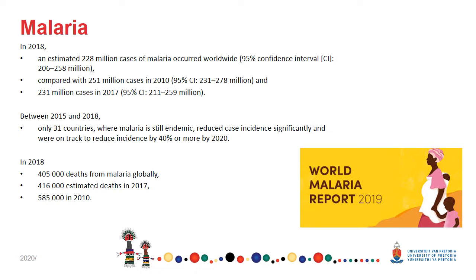If we take a closer look at the World Malaria Report in 2019, we see that from 2010 up until 2018, there's been a decrease in the number of cases worldwide from about 251 million to approximately 230 million cases. So there has been a reduction from 2010 to 2018. Furthermore, between 2015 and 2018, we know that malaria is still a problem in about 31 countries, and although there is a reduction in cases, we are still on track to reduce the incidence of malaria by 40% or more by 2020.